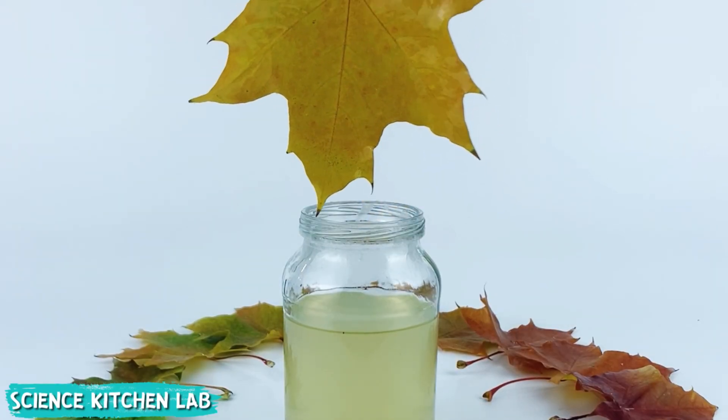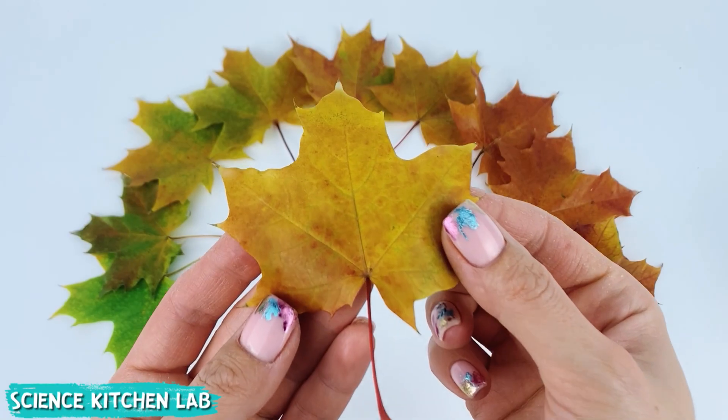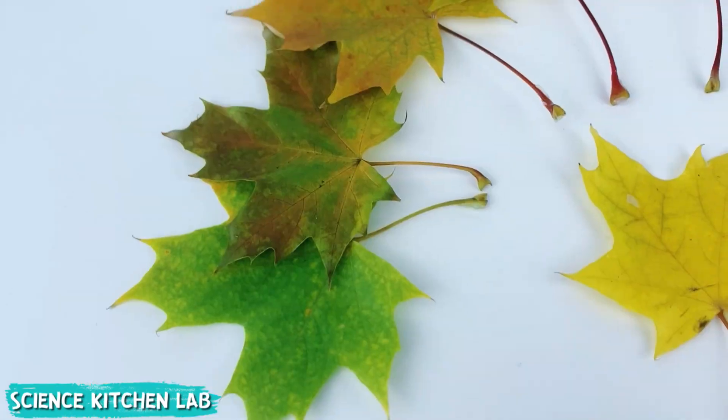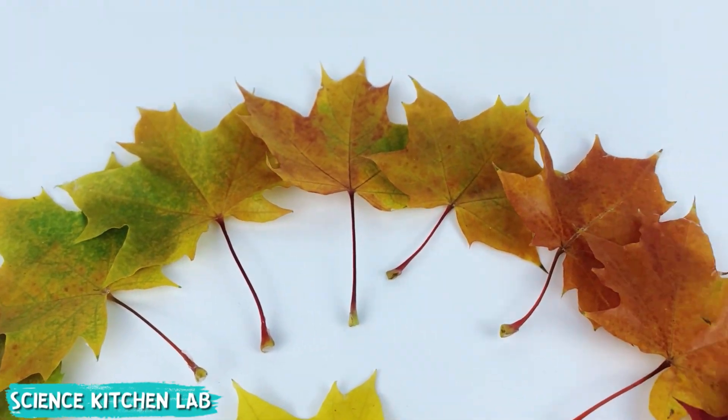We take a leaf by its stem, carefully dip it in liquid paraffin, and let it completely solidify. We get bright glossy leaves that will preserve their beauty for a long time.